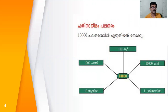100 hundreds are 10,000. 10,000 ones are 10,000. 10,000 is also equal to 10,000. 1,000 tens are 10,000. 10,000 are also 10,000. So we have different forms of numbers.